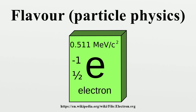Flavor Symmetry: If there are two or more particles which have identical interactions, then they may be interchanged without affecting the physics. Any linear combination of these two particles gives the same physics, as long as the combinations are orthogonal or perpendicular to each other. In other words, the theory possesses symmetry transformations such as where u and d are the two fields, and M is any two-by-two unitary matrix with unit determinant. Such matrices form a Lie group called SU(2). This is an example of flavor symmetry.